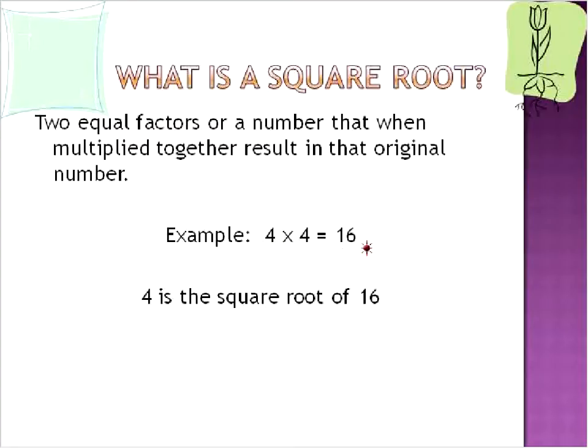For example, 4 times 4 is equal to 16. So 4 is a factor of 16, and when multiplied by itself gives us the original number back. So we would say 4 is the square root of 16. Despite popular belief, it is not the root system of a plant shaped like a square. It is a math term.